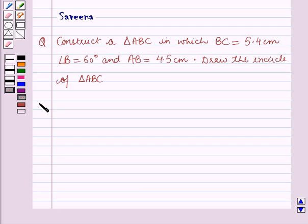Now we will start with the solution. First of all, we will make a rough diagram of triangle ABC in which BC is equal to 5.4 cm, AB is equal to 4.5 cm and angle B is equal to 60 degrees. Now we will start with the steps of construction.